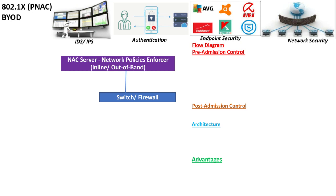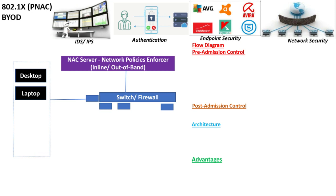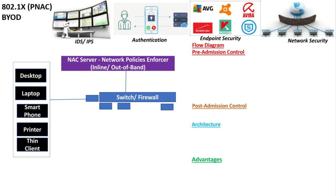The network access control server is connected to a switch or a firewall, and this switch and firewall has multiple ports. Some of these ports are granting access to endpoints, which may include desktops, laptops, any bring-your-own device such as a smartphone, and also any printer or dumb terminal like thin clients. Once these devices try to connect to the organization network over the switch, the network access control implements security for such a mechanism.